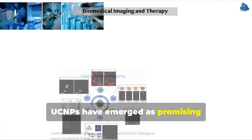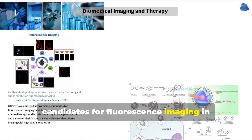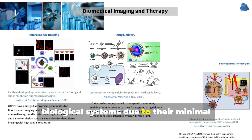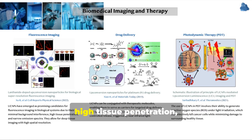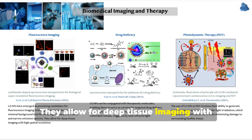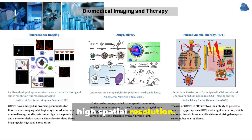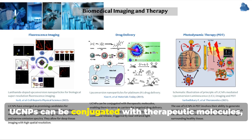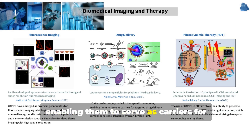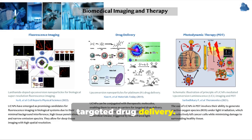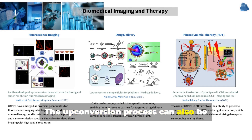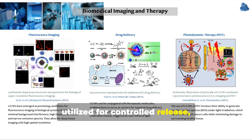UCNPs have emerged as promising candidates for fluorescence imaging in biological systems, due to their minimal background interference, high tissue penetration, and narrow emission spectra. They allow for deep tissue imaging with high spatial resolution. UCNPs can also be conjugated with therapeutic molecules, enabling them to serve as carriers for targeted drug delivery. The upconversion process can also be utilized for controlled release, triggered by near-infrared light.